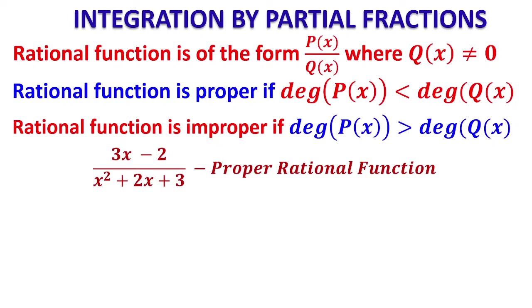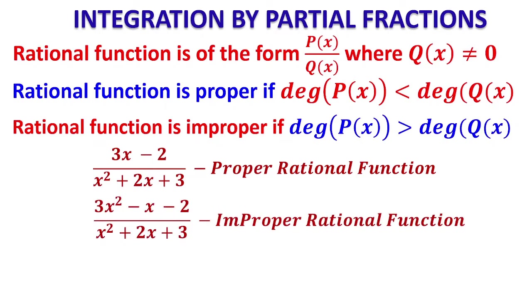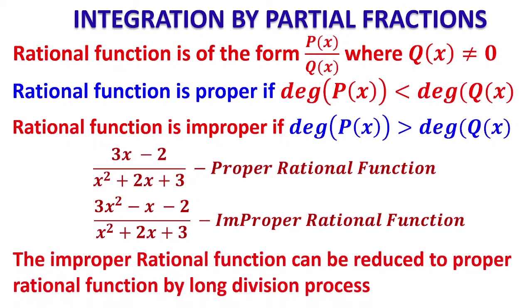For example, (3x - 2)/(x² + 2x + 3): numerator degree is 1, denominator degree is 2, so it is proper. For (3x² - x - 2)/(x² + 2x + 3): numerator degree equals denominator degree, so it is improper. If numerator degree is 3 and denominator degree is 2, it is also improper. An improper rational function can be reduced to a proper one by the long division process.